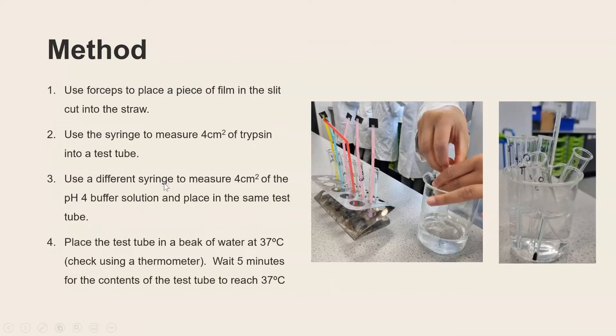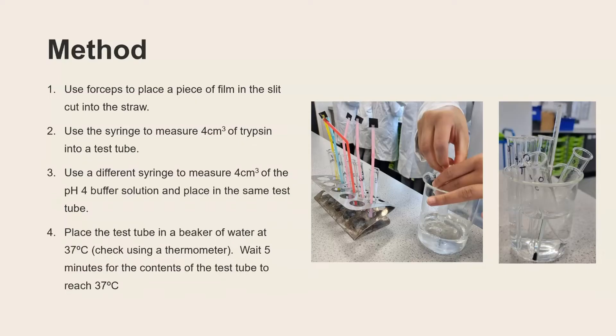Okay so the method then. The first step is you'll need to attach your film to a straw. Now we're actually using film that's already been cut and straws which have already got slits cut in them to slide the film in. If you didn't have that then that would actually be your first step. Next we're going to use a syringe to measure out four centimeters cubed of the enzyme trypsin and put that into a test tube. Next we're then going to measure out four centimeters cubed of a pH 4 buffer solution and put that into the same test tube and then that test tube is placed into a beaker with water at 37 degrees C and that is acting as your water bath.